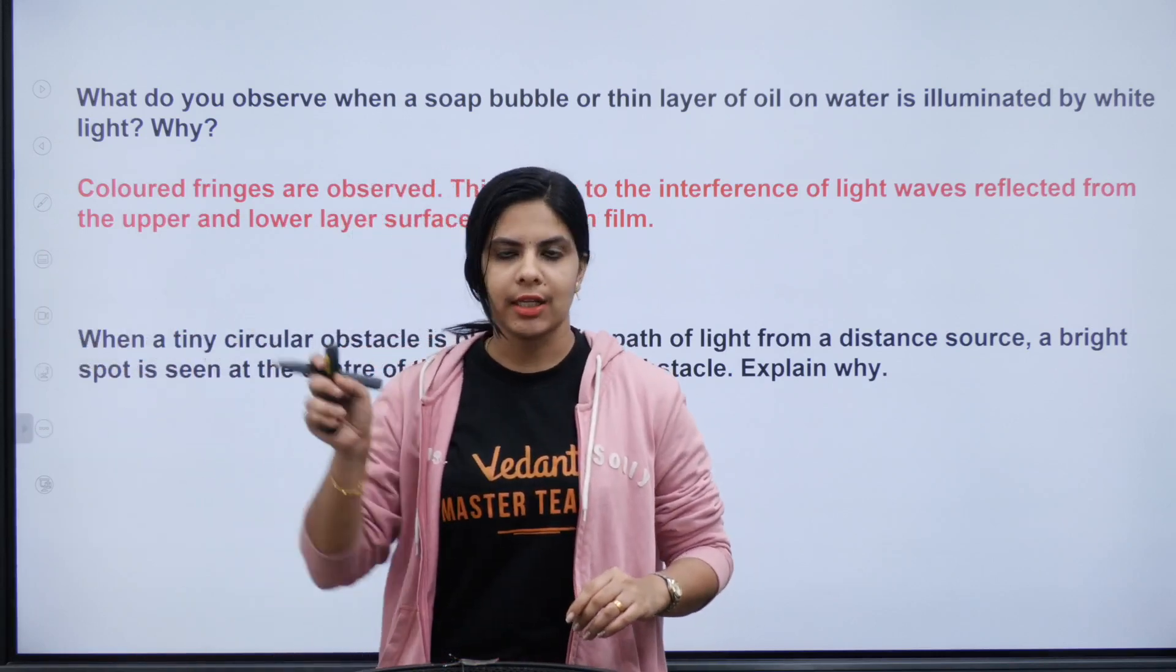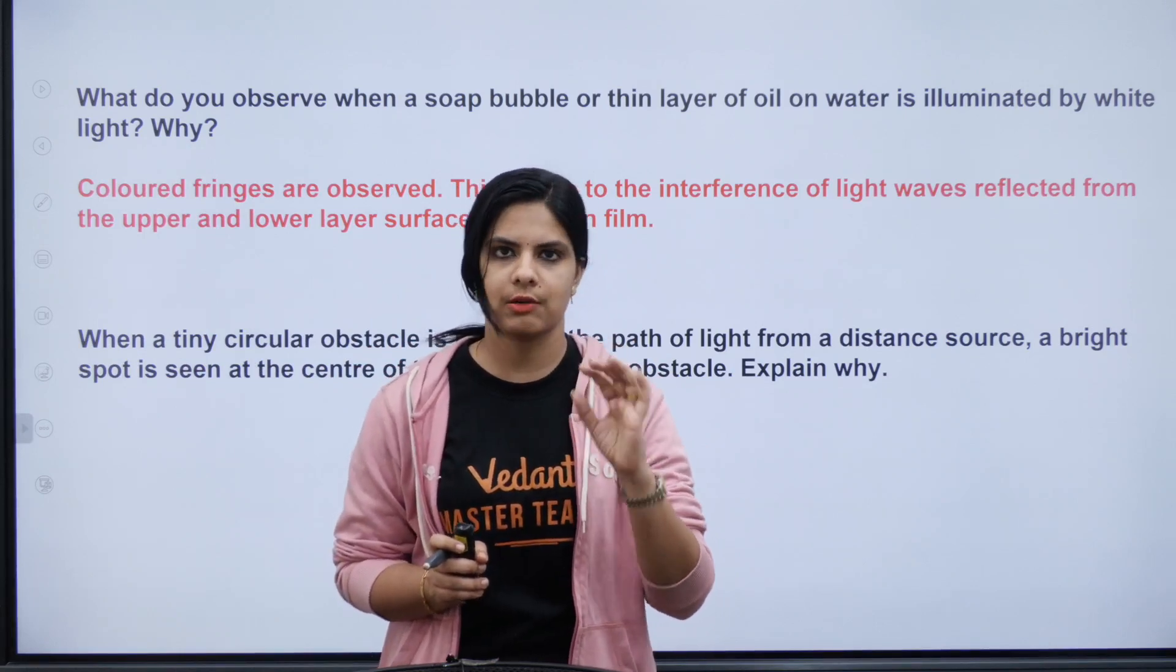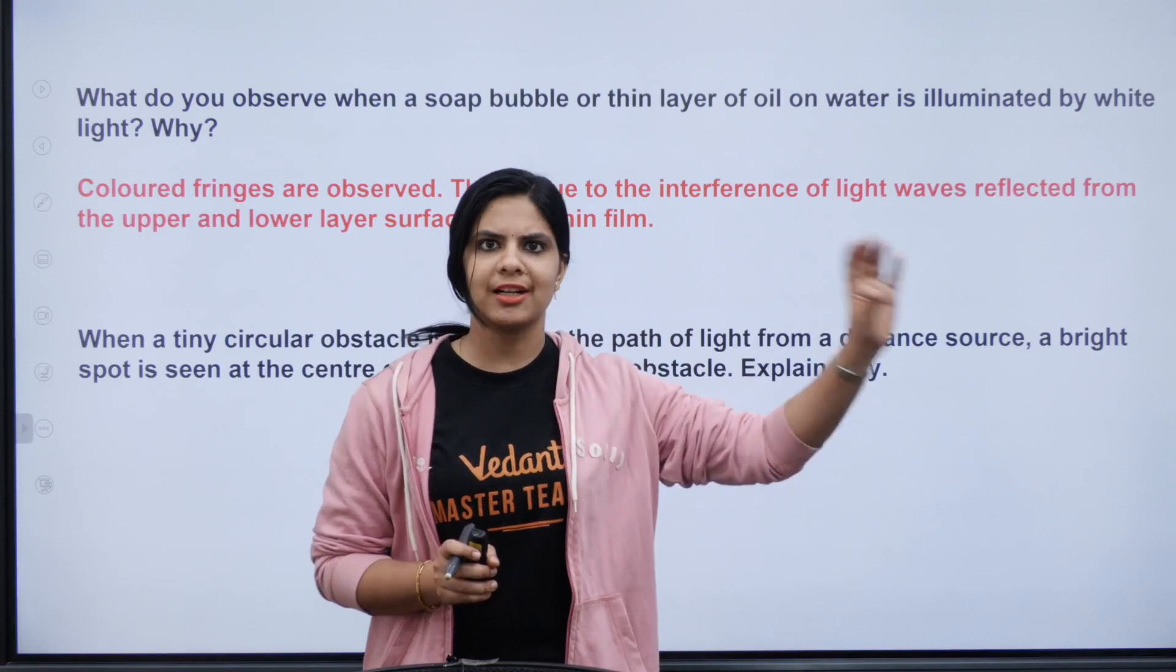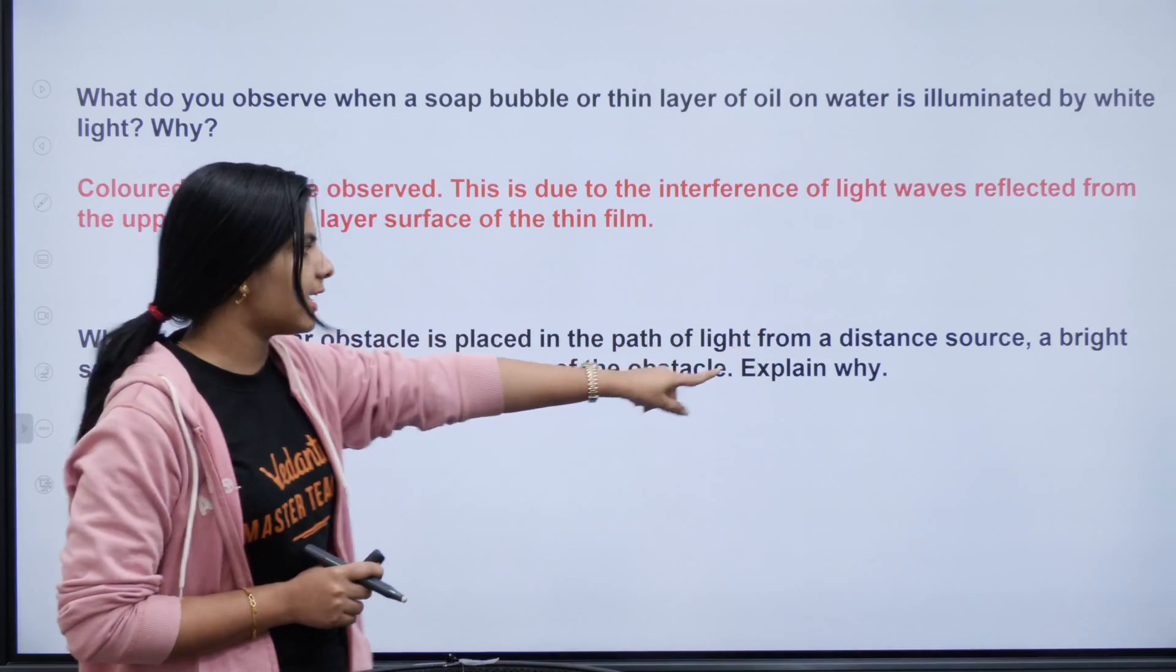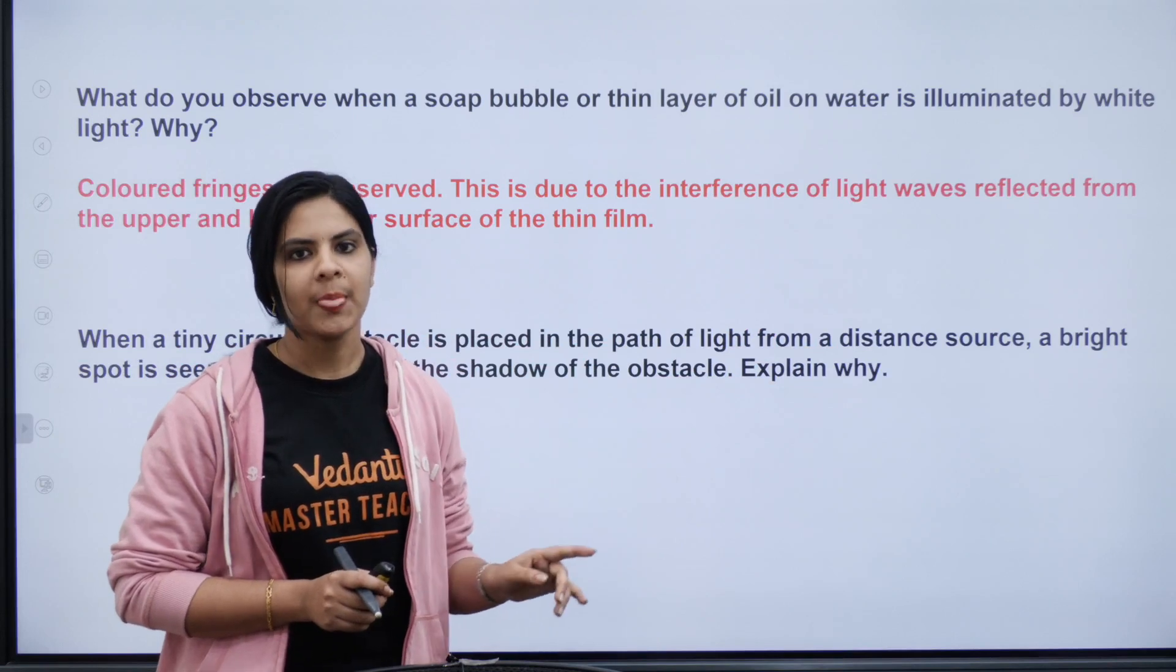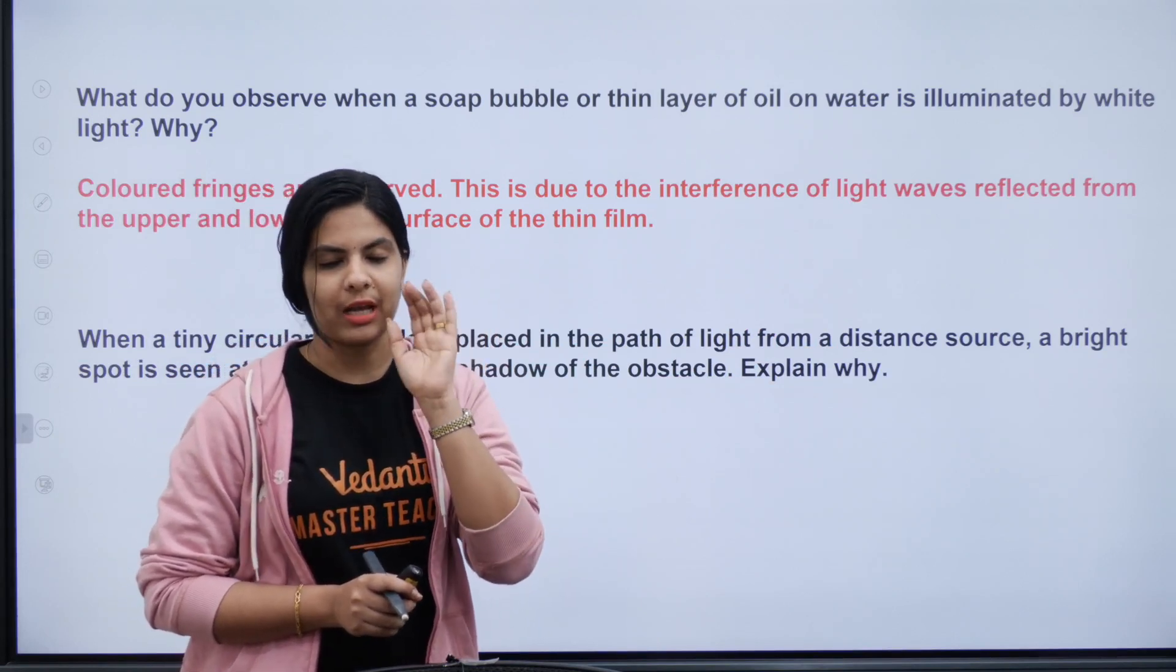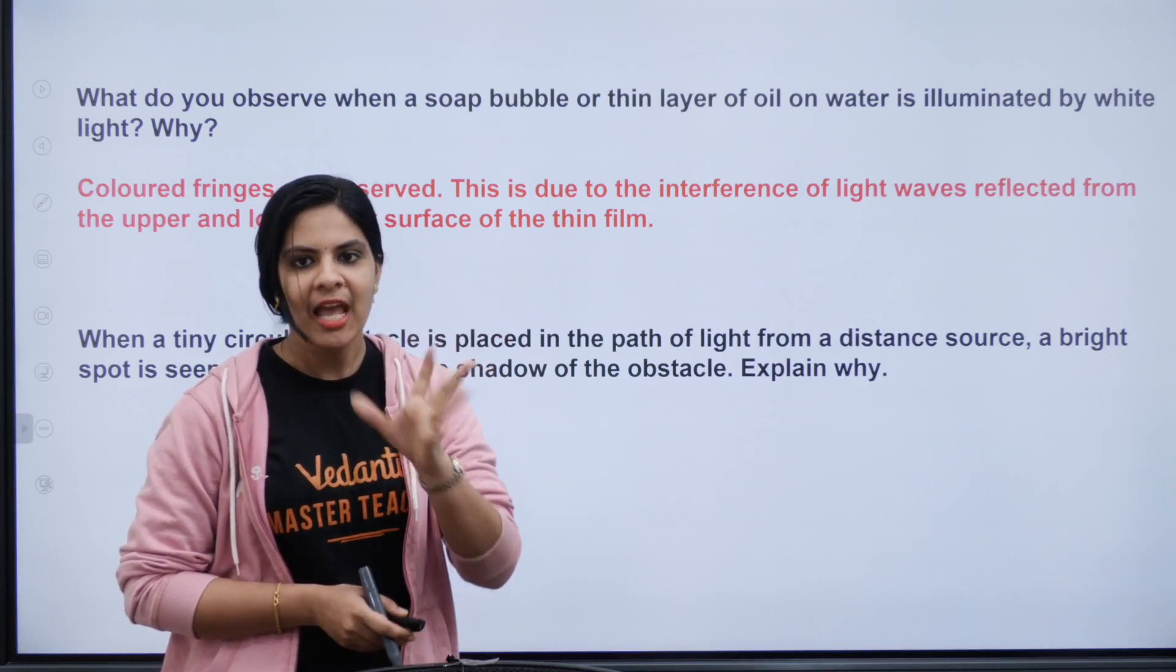When light is coming and in that path we have a circular shaped obstacle, we are looking at the center of the shadow of the obstacle. We are looking at a bright spot.